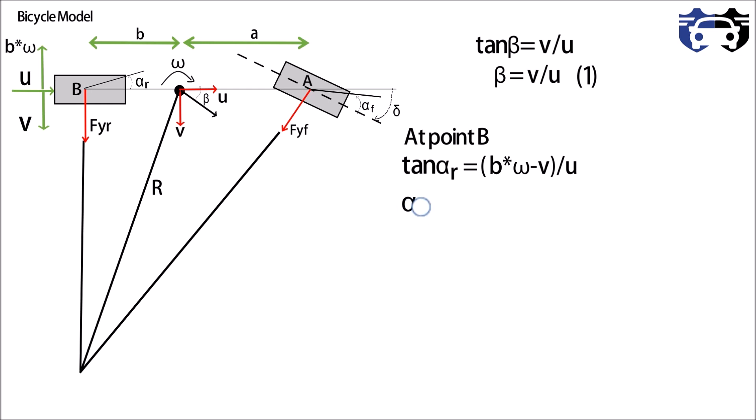So we can write tan(alpha_r) equals to b into omega minus v whole divided by u. And as alpha_r is very small so we can write alpha_r equals to b into omega divided by u minus v by u. This is our equation two.